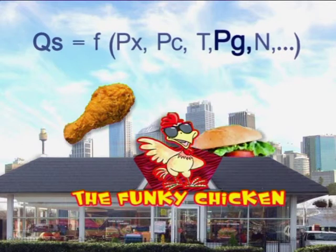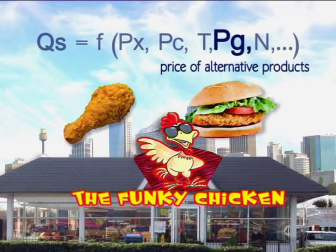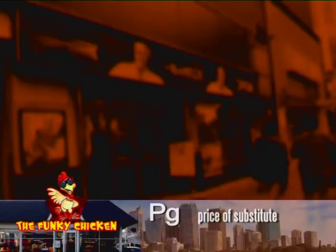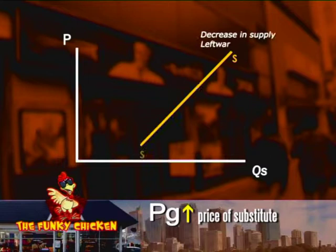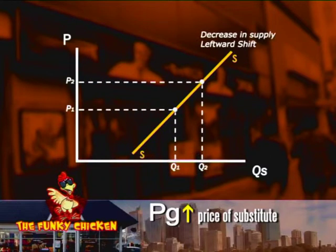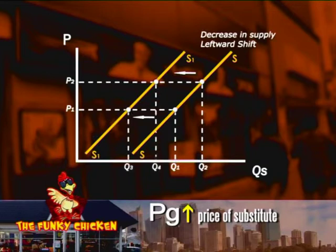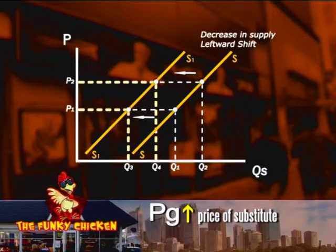And finally, looking at the price of alternative products, PG — what will happen to the supply curve for fried chicken pieces if the price of chicken burgers goes up? The owners of the funky chicken want to maximise profits, so they'll now try to sell more chicken burgers. But what this means for fried chicken pieces is that at each price fewer pieces of fried chicken are now produced, and we get a leftward shift of the supply curve for fried chicken pieces.